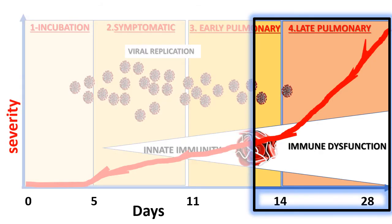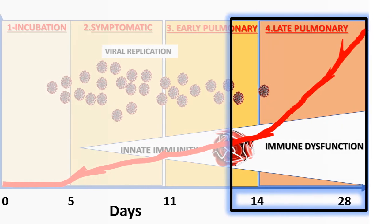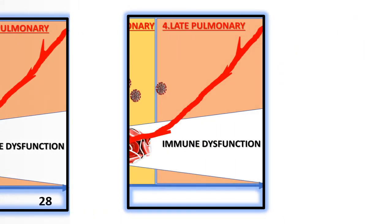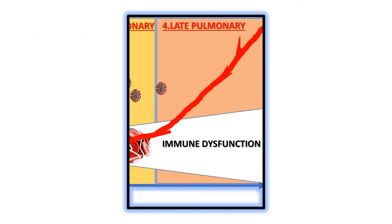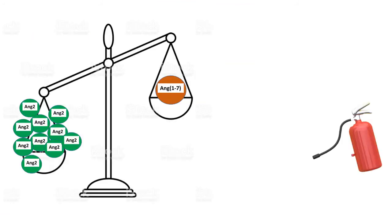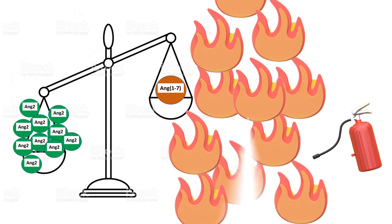Thrombotic occlusion is the reason for many manifestations like stroke, which is not uncommon in COVID patients, patients with intra-coronary thrombosis, and even patients presenting with COVID toes. Once again, the endothelial damage leads to collagen and Von Willebrand factor exposure, which leads to platelet aggregation and thrombosis. Now you start getting thrombosis inside your capillaries, which will lead to microvascular occlusion and ischemic injury in a vasculature which is already vasoconstricted.